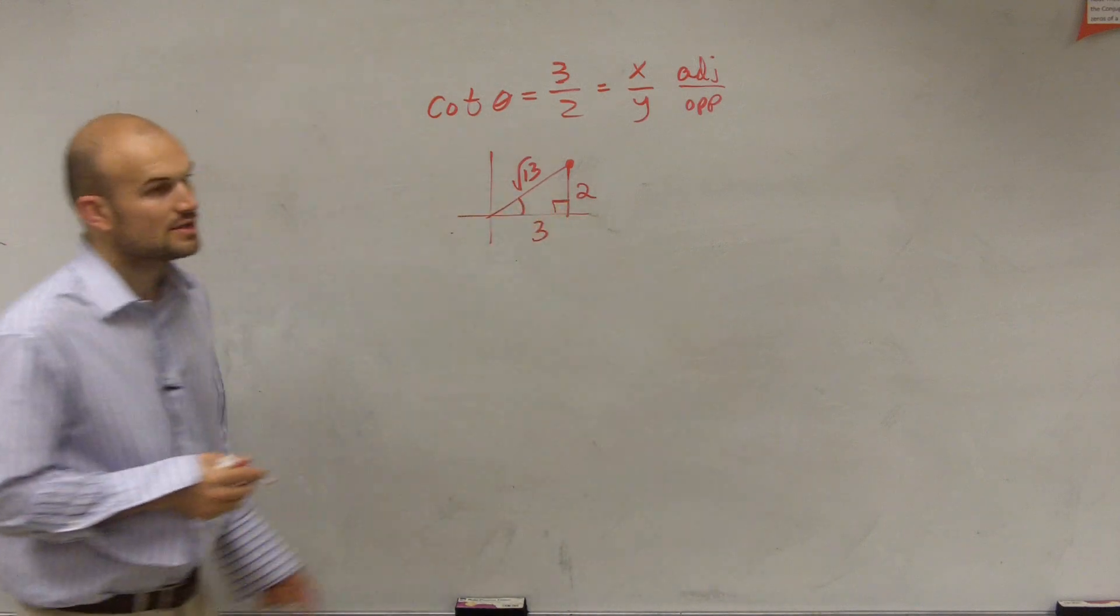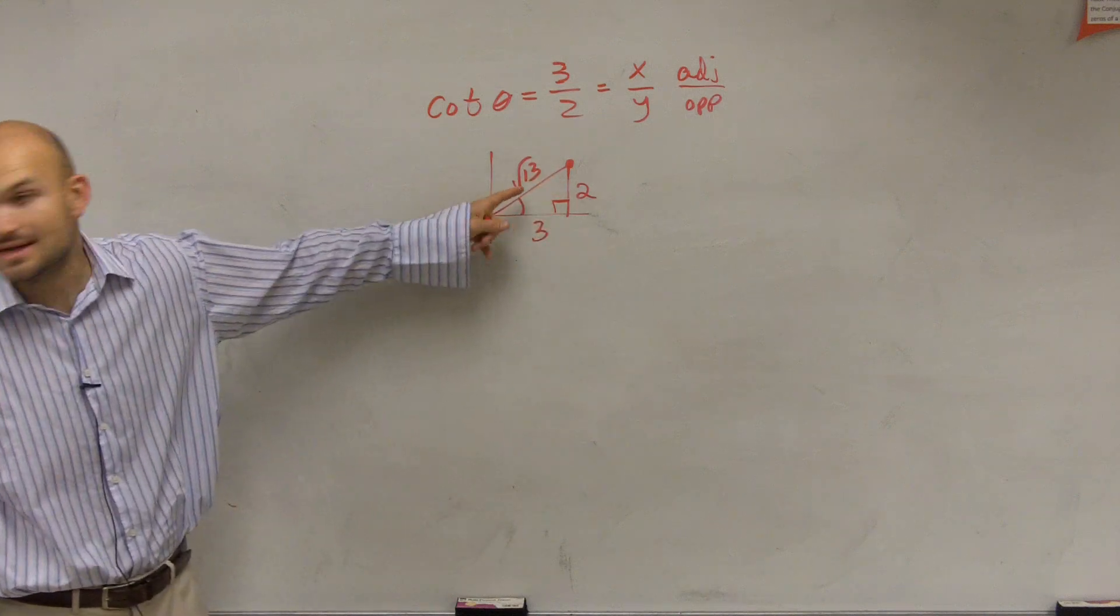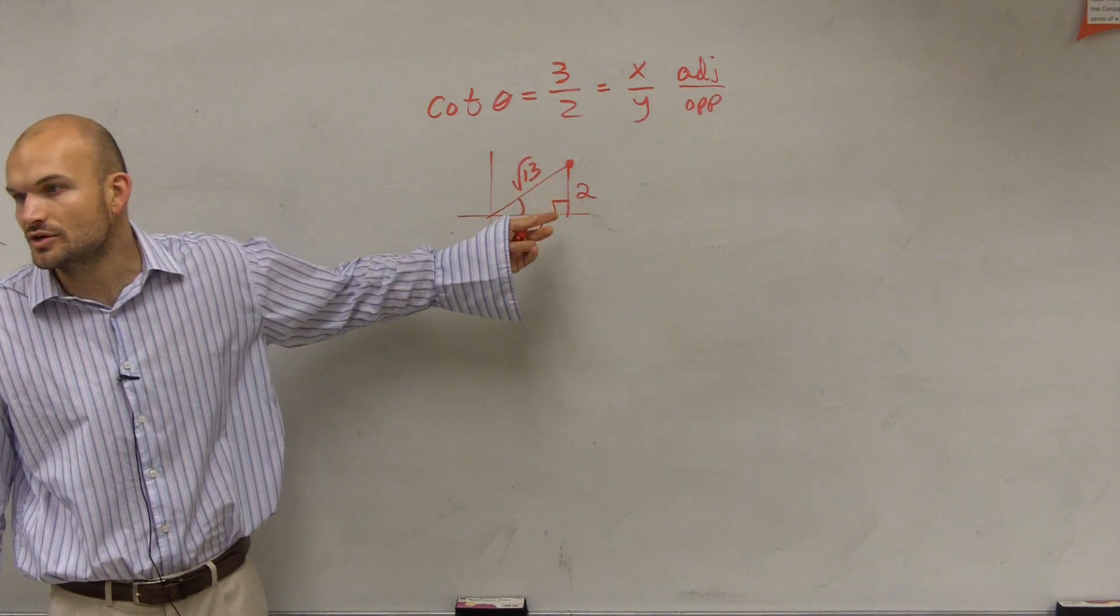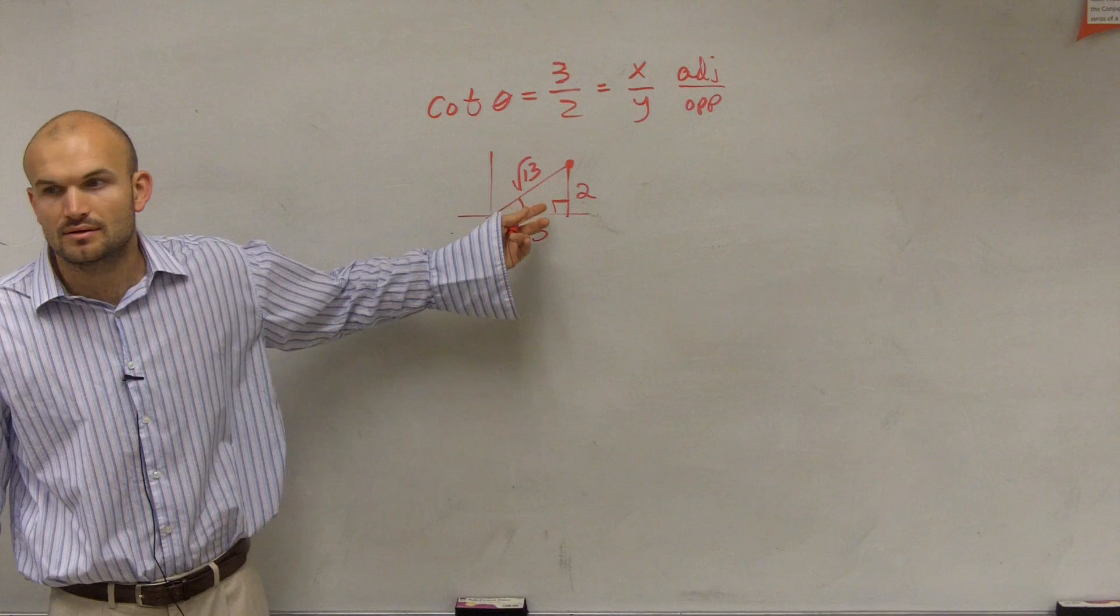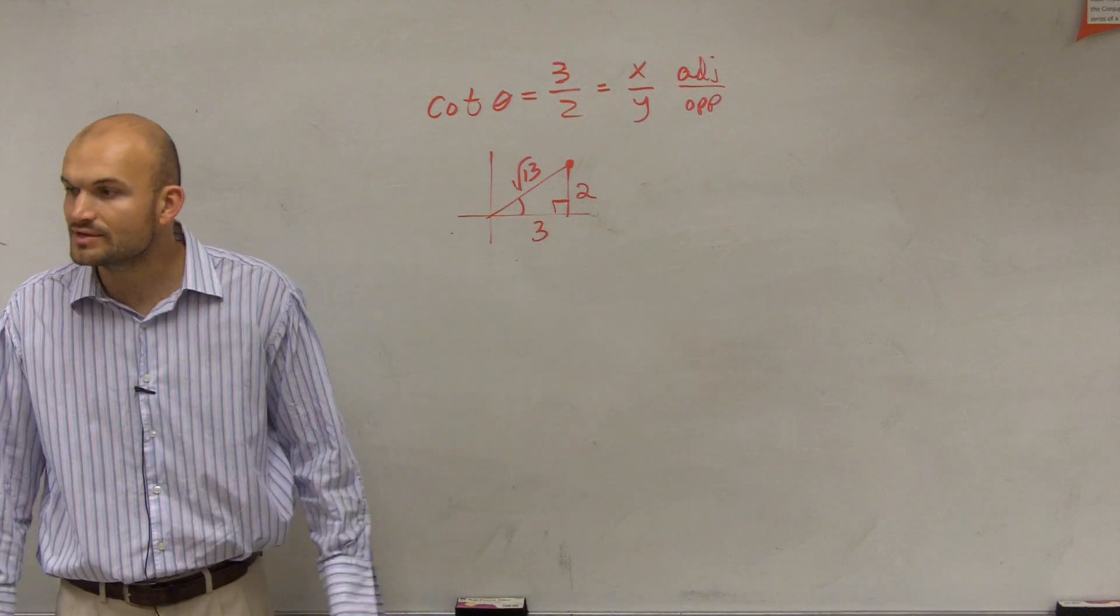So this is going to be your right angle. Notice that it's not on the unit circle, right? Because on the unit circle, our radius is 1. Here our radius is square root of 13.